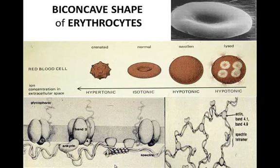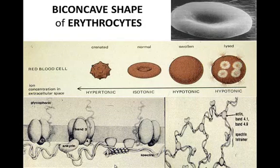Here you will see a red blood cell in different types of solution. Isotonic, it has a biconcave shape. Put it in hypotonic solution and extremely hypotonic, it will lyse the cell.